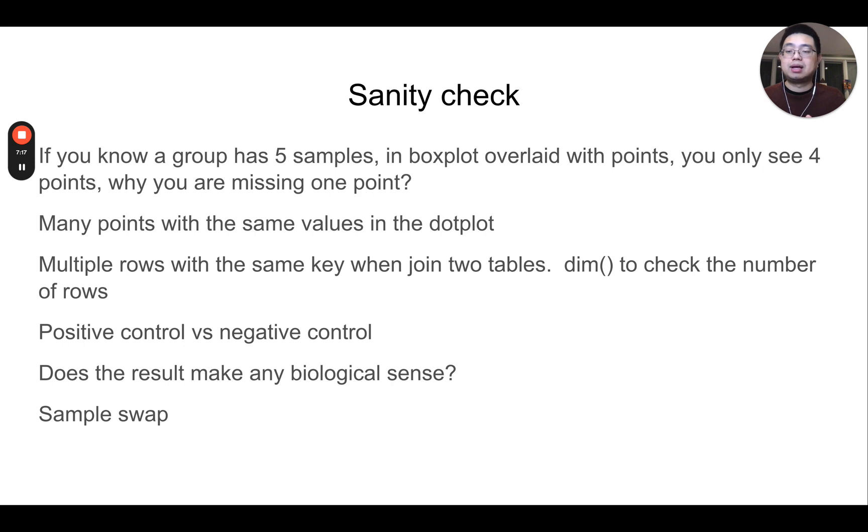And lastly, this example is about sample swap. If you have multiple samples, and then for a particular sample, you know it's a female sample, just by the label. However, when you're doing mutation calling in this case, you'll see variants actually in the Y chromosome. There's something wrong with that. Maybe people just mislabeled the sample and you need to go back and check the data and also check with the experimentalist who carried out the experiments and see whether they did make a mistake. Sanity check is very important. Once you have done enough data analysis, you have this sense of data, and then you always do sanity check when you're doing the data analysis.